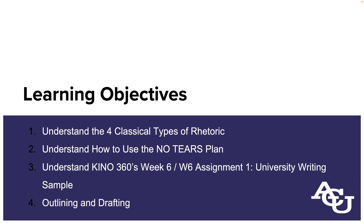Let's look at our plans for today. We're going to look briefly at the four classical types of rhetoric—you may or may not have encountered these earlier in your studies. The four classical types of rhetoric are ways of categorizing arguments recognized all the way back in classical Greece, and they're still great ways of understanding not only arguments you are making, but how other people are arguing and what an appropriate response is. We'll also look at the no-tears plan for paragraph writing, and then a specific assignment from Keynote 360 about creating an argumentative essay writing sample.